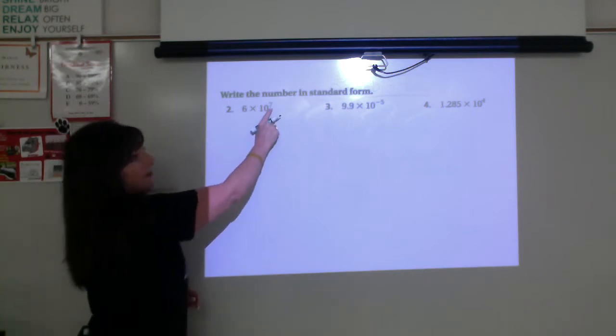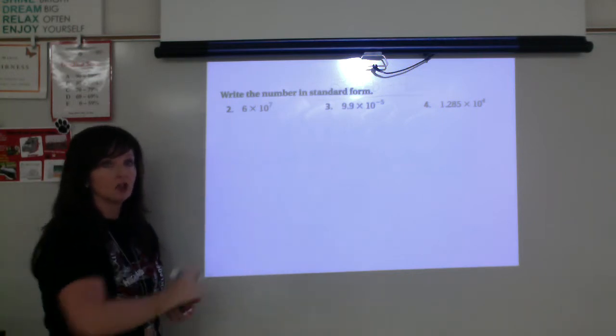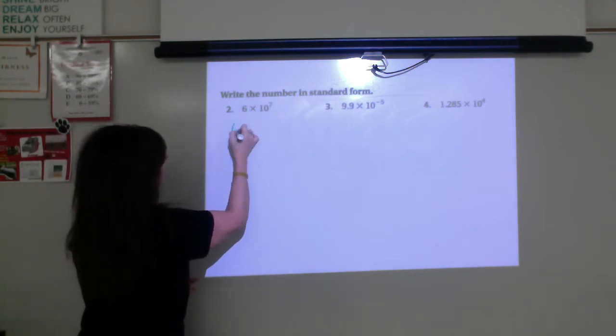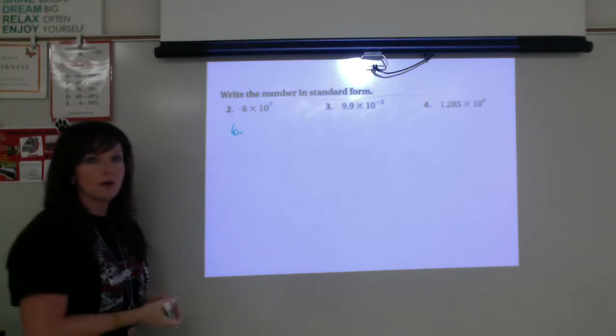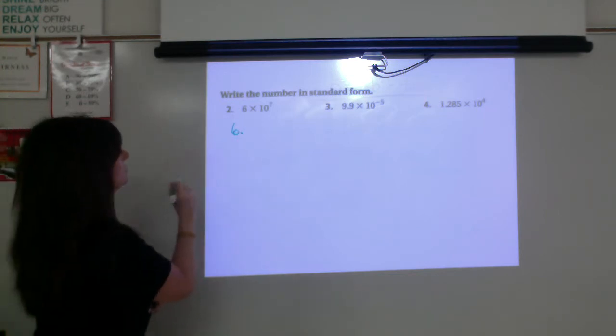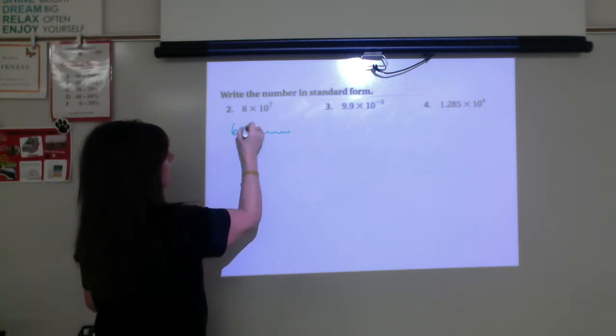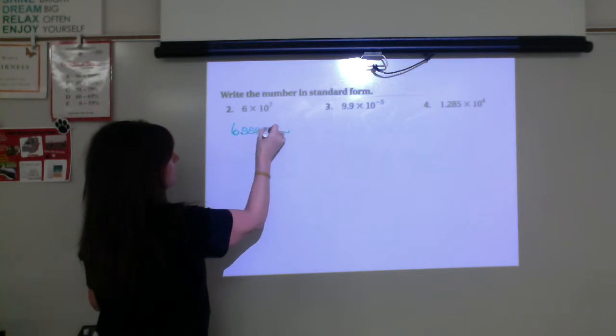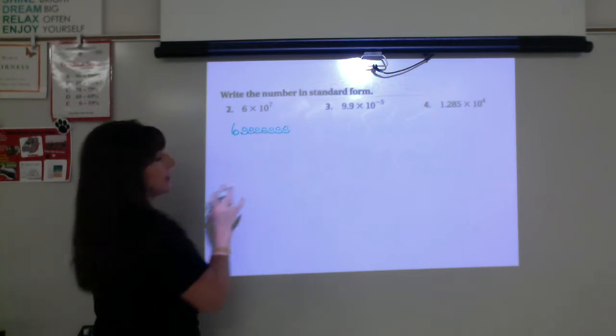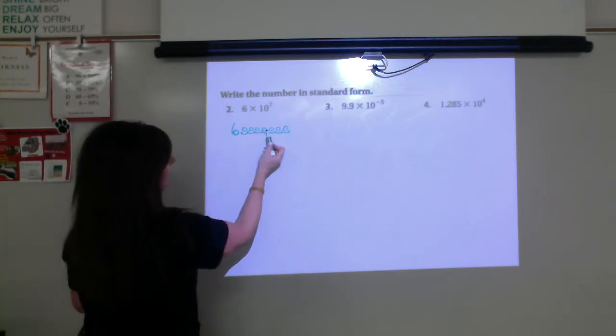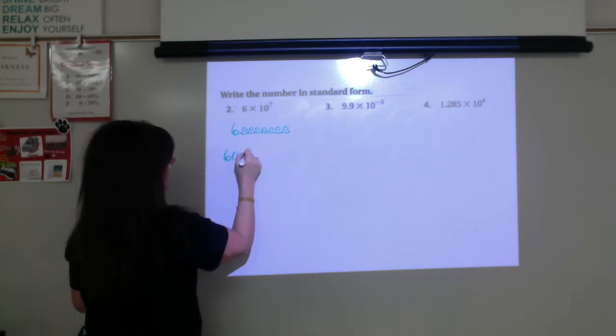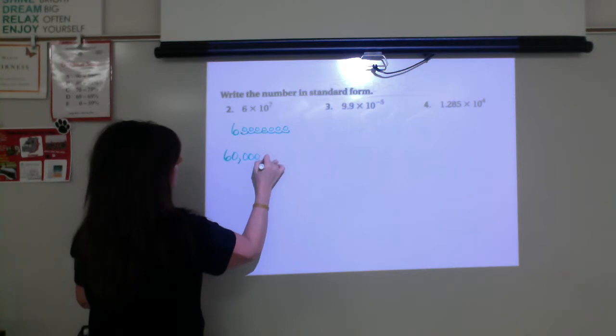In this case, 7 is positive. So that's telling us it's a large number. The decimal point would reside right there to the right of the 6. We're going to move it 7 places to the right. 1, 2, 3, 4, 5, 6, and 7. Fill in with zeros. And then go ahead and add your commas. So after every 3 zeros, we'll have 60 million for our number.